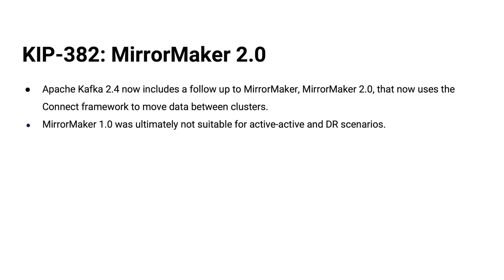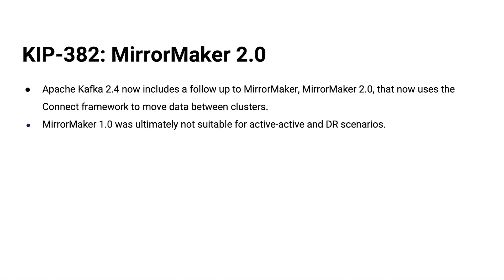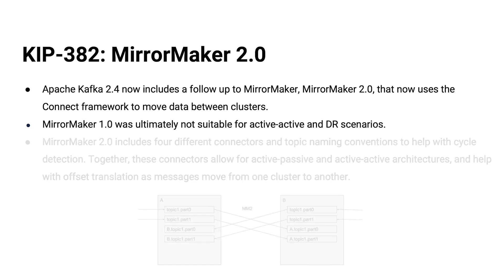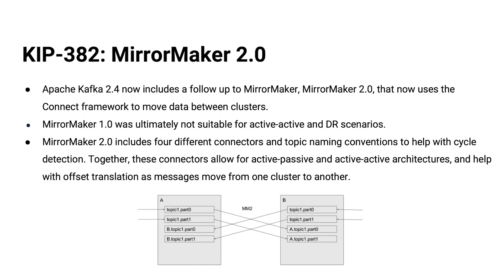KIP 382: MirrorMaker 2.0. MirrorMaker has been around for a while — it was originally intended as a tool to help you do multi-data center Kafka deployments, but it had problems. For example, when it would create a topic it would always use broker configs on the destination side, maybe giving you the wrong number of partitions, so source and destination topics would end up with different partition counts. It wouldn't replicate ACLs or any config. MirrorMaker 2.0 attempts to address these and many other things. It's got features to help avoid replication cycles between active-active data center deployments, where you have topics in both data centers being produced to and replicated in both directions. MirrorMaker 2.0 gives you upgrades in this area.